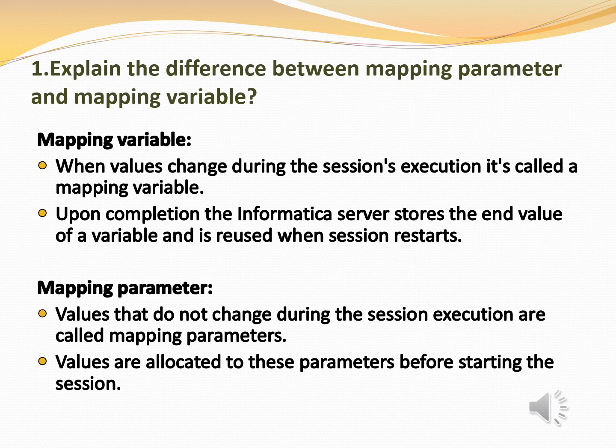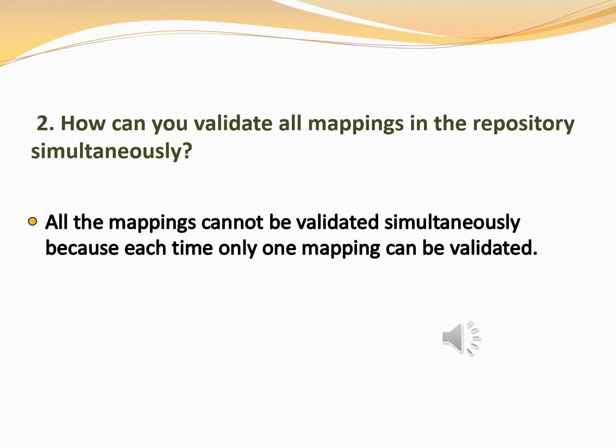Values that do not change during the session execution are called mapping parameters. Values are allocated to these parameters before starting the session. The second question is: how can you validate all mappings in the repository simultaneously? The answer is: all the mappings cannot be validated simultaneously because each time only one mapping can be validated.